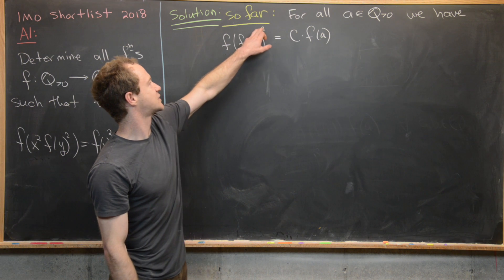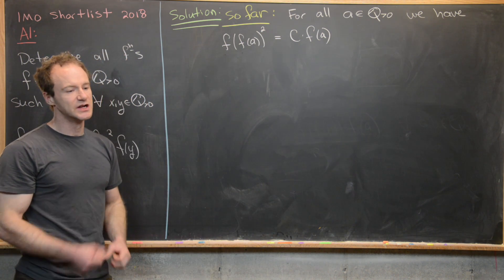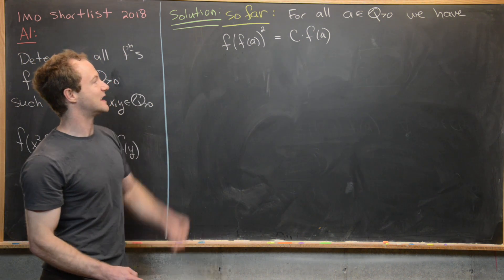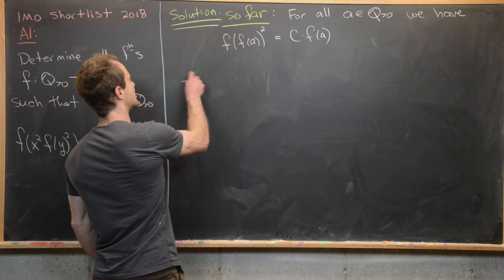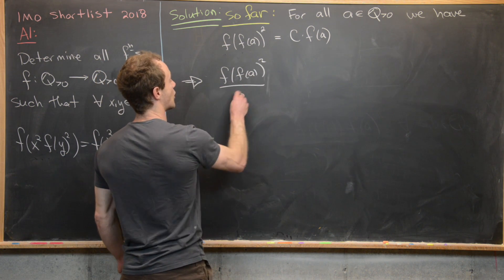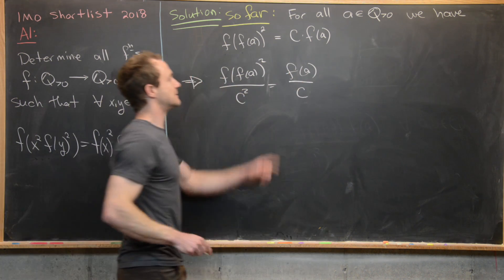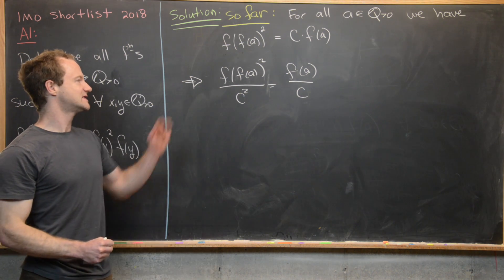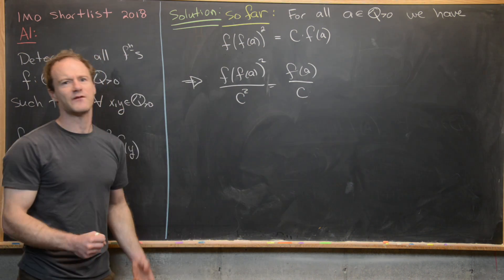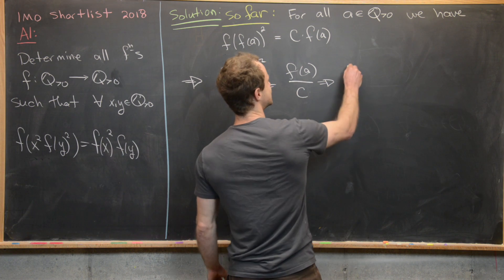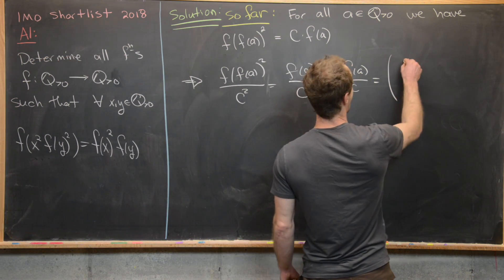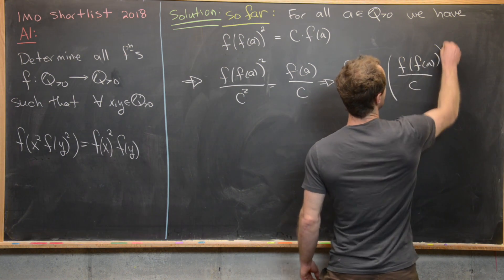Now we want to further symmetrize this equation. We have f((f(a))²) = c · f(a), and we'd like to have c appear symmetrically on both sides. We do that by dividing both sides by c², which gives f((f(a))²/c²) = f(a)/c. This is a nice symmetric version: the whole left-hand side argument is a perfect square, and we can rewrite it as f(a/c) = f(f(a/c))².